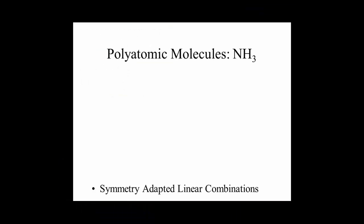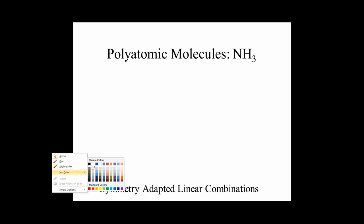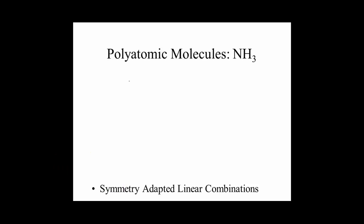For an example, we'll look at ammonia. Just as we did for the diatomics, the first step is to determine the symmetry. So let's look at the point group for ammonia. We get the molecular geometry from VSEPR — trigonal pyramidal for ammonia — with the primary rotation axis C3, giving us the C3v point group.